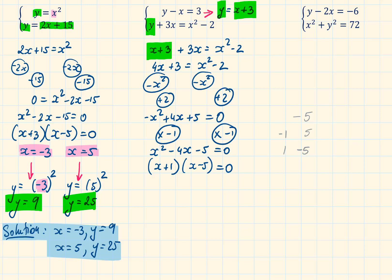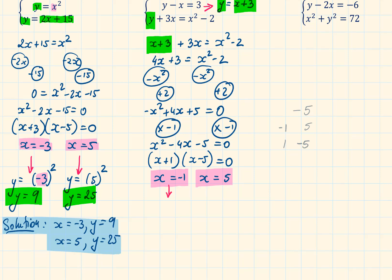Making the first bracket equal to 0 — x plus 1 equals 0 — gives one solution: x equals minus 1. Making the second bracket equal to 0 gives another solution: x equals 5. Again, we have the solutions for x. The next step is to find the corresponding y values. The easiest equation to substitute into is the first equation: y equals x plus 3.